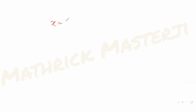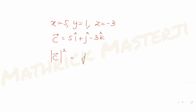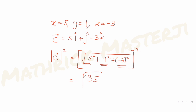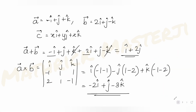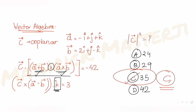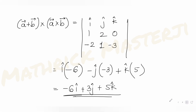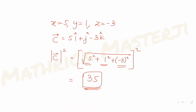Now we have x = 5, y = 1, z = −3, so vector c = 5i + j − 3k. The magnitude squared is 5² + 1² + (−3)² = 25 + 1 + 9 = 35. The answer is 35, which matches option C.